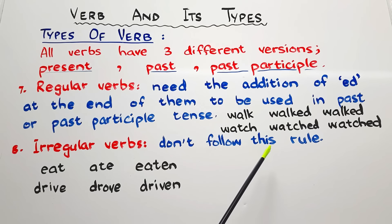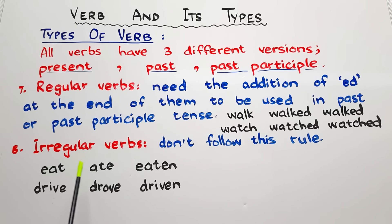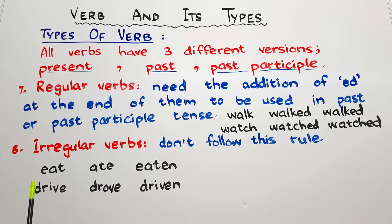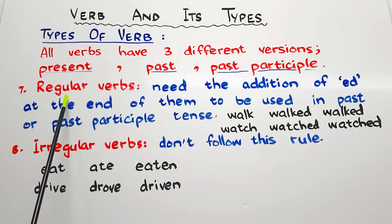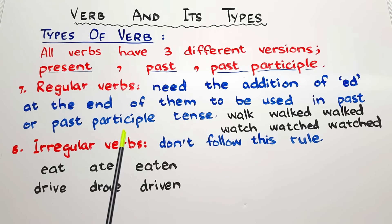However, if verbs do not follow this rule, they are called irregular verbs. Like 'eat, ate, eaten' — the past and past participle forms are totally different. 'Drive, drove, driven.' There are lots of examples of both types. When we introduce verbs to children, we go for regular verbs first and then move on to irregular verbs, because some really common verbs — like 'eat,' 'drink,' 'drive' — are irregular.